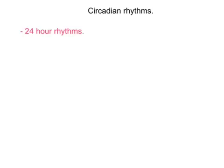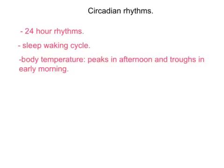Now we are going to go into more detail about circadian rhythms. As mentioned earlier, these are 24-hour rhythms — circadian comes from Latin for 'about a day.' One main example is the sleep-waking cycle. Another is body temperature, which changes throughout the day, with one peak in the afternoon and one trough in the early morning. Hormones, neurotransmitters, and other physiological processes also show similar circadian variation, and there may be over 100 bodily processes linked to this 24-hour period.